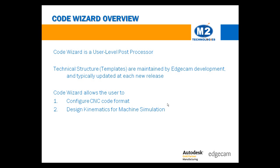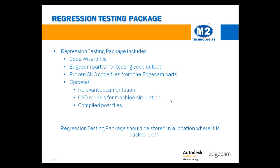Your proven CodeWizard post-processor inherits all new ability at the template update, and that may require some minor adjustments to use. The reality is that the template updates will introduce changes, but with a good regression testing package, you can confidently upgrade to the latest Edgecam version and take advantage of the newest functionality without worry that the CNC code will need editing as a result. M2 Technologies provides a regression testing package with each post-processor that we build.